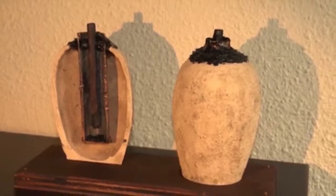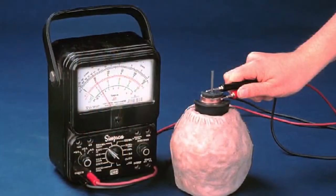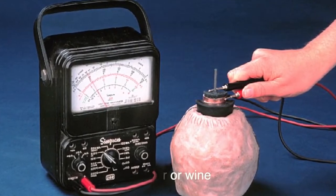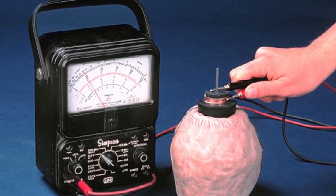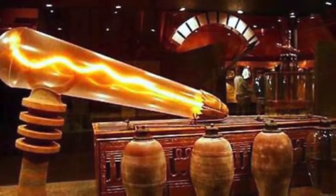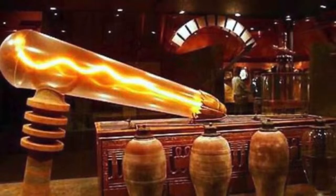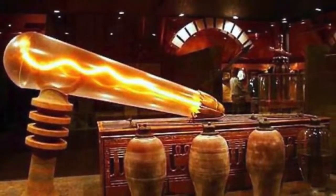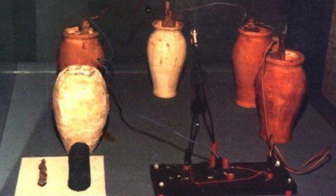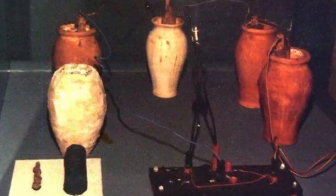Inside the jar, researchers discovered evidence of an acidic substance, such as vinegar or wine, which could have served as an electrolyte. The theory behind the Baghdad battery is that it could have been used as a primitive form of battery to generate a small electric current. When the copper cylinder and iron rod come into contact with the electrolyte, they create a simple electrochemical cell.